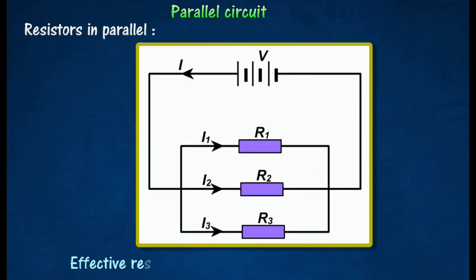The effective resistance R of resistors in parallel is always less than the resistance of any one of the resistors by itself.